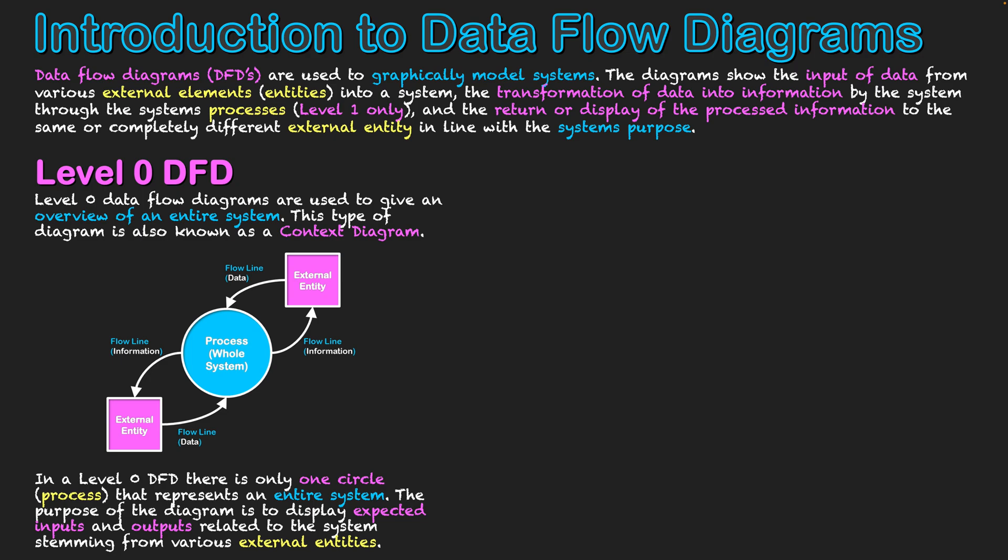Sometimes one entity might be the one putting the data in, and then another entity that is separate reads that data after processing as a different form of information, and then it might return something through a different purpose of the system. It's about identifying how these different external entities are interacting with the system, what they're putting in and what they're getting out of it.